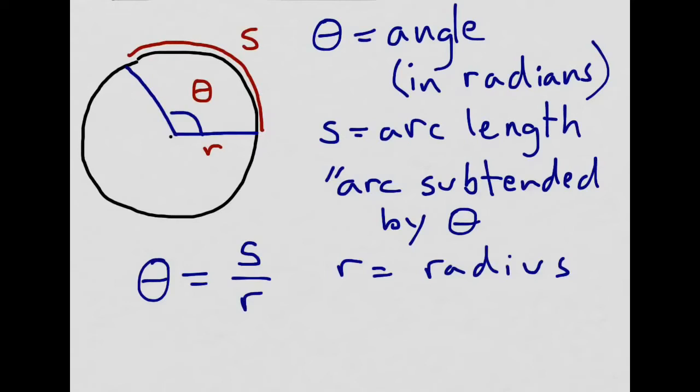In a unit circle, when r equals 1, theta is simply equal to the arc length because if the radius equals 1, theta equals S. So in the unit circle, the actual angle measure is directly related to the arc length.